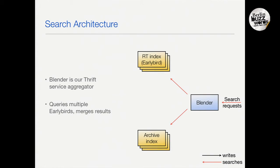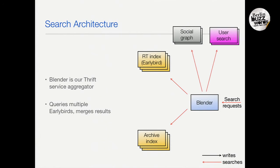One component to mention is our Blender — a Thrift aggregator. When a search request comes in, it hits the Blender first, which fans out to different systems and indexes, including the social graph and user search index — users are indexed separately from tweets. It knows about our hash partitions and fans out to n replicas to get a complete set of results. Then it merges all results together, either doing a simple merge of search result lists or blending different result types like tweets, users, videos, and images — a more complicated ranking problem.